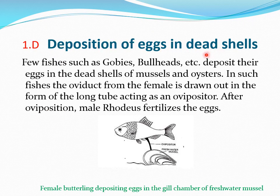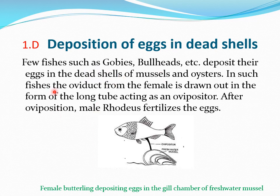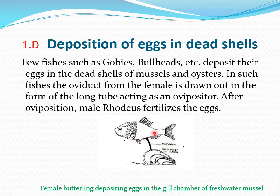Next is deposition of eggs in dead shells. Some fish species, for example gobies, deposit their eggs in the dead shells of bivalves or oysters. In such fishes, the oviduct from the female is drawn out in the form of a long tube acting as an ovipositor, as shown in the diagram. Using this ovipositor, the female deposits eggs inside the shell, where the male fish fertilizes them.